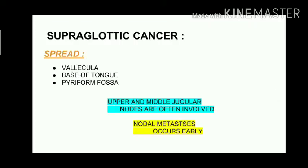First, let's see about supraglottic cancer. The spread of supraglottic cancer: it can extend upwards into the vallecula and base of the tongue, and on the sides into the piriform fossa. It involves the upper and middle jugular nodes. A characteristic feature is that nodal metastasis is an early feature in supraglottic cancer.